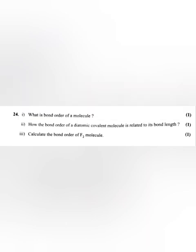Calculate the bond order of F2 molecule. Answer: MO configuration of F2 is sigma 1s2, sigma star 1s2, sigma 2s2, sigma star 2s2, sigma 2pz2, pi 2px2, pi 2py2, pi star 2px2, pi star 2py2.